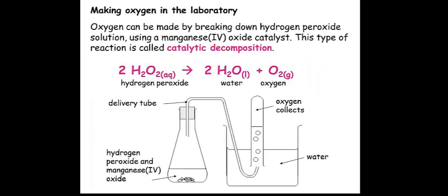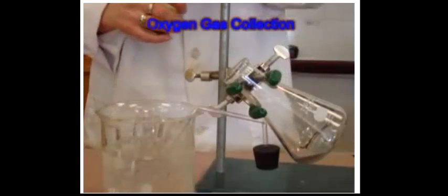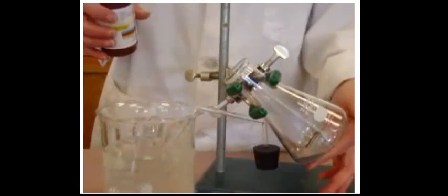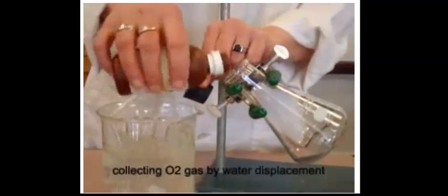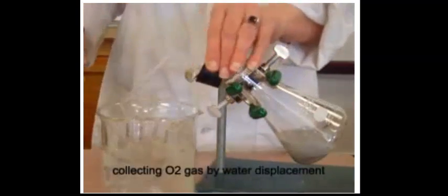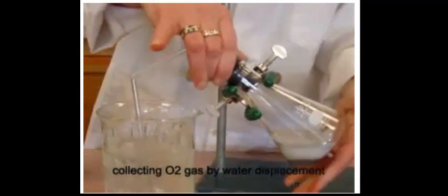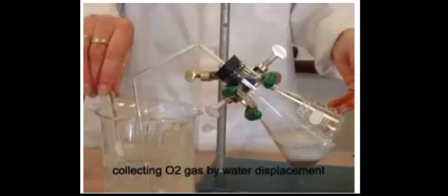We can make oxygen in the laboratory. There is an easy method involving hydrogen peroxide solution (H2O2 aqueous), and to it we add manganese(IV) oxide as a catalyst. It is a catalytic decomposition reaction that takes place, which means catalyst decomposes or breaks down hydrogen peroxide, and we form water and oxygen gas.